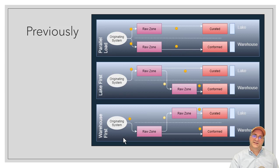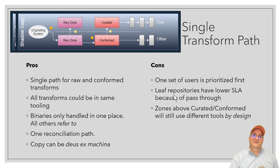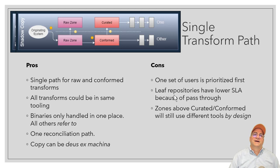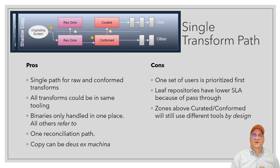Maybe the orange transforms are the ones the business needs to understand. In this case, we're going to look at doing a single transform path for the primary zones — which I'll assume are raw and curated. If you have a presentation zone or something else, that's somebody else's responsibility. So here we have only two transforms: one into the raw zone of whichever area we choose, and then another transform to put it into conformed or curated, with only copy operations for the primary zones.